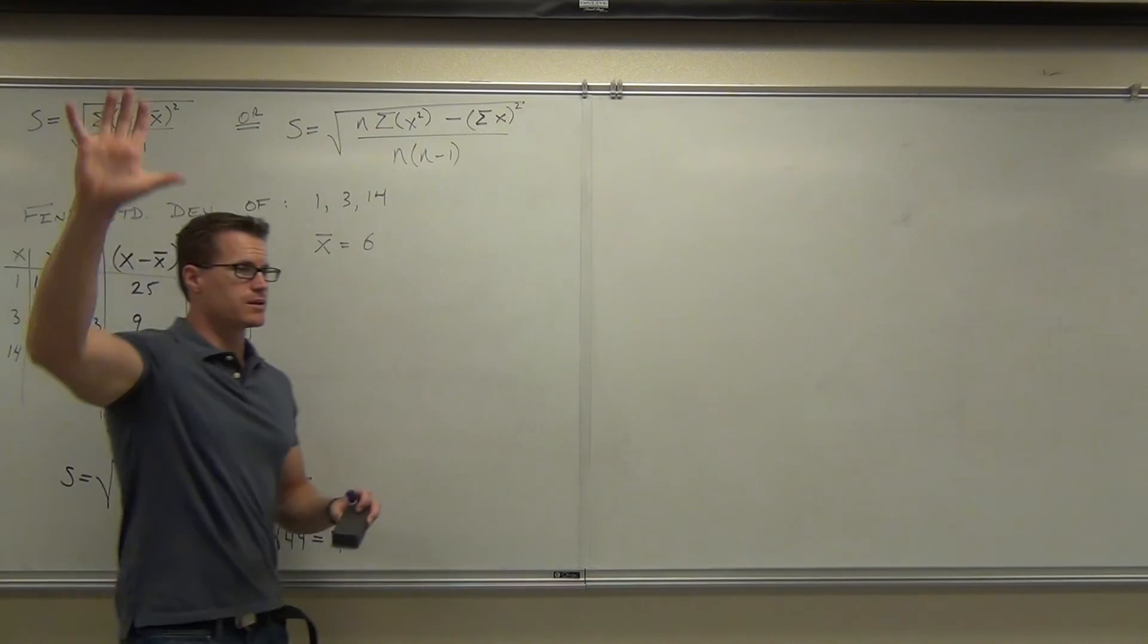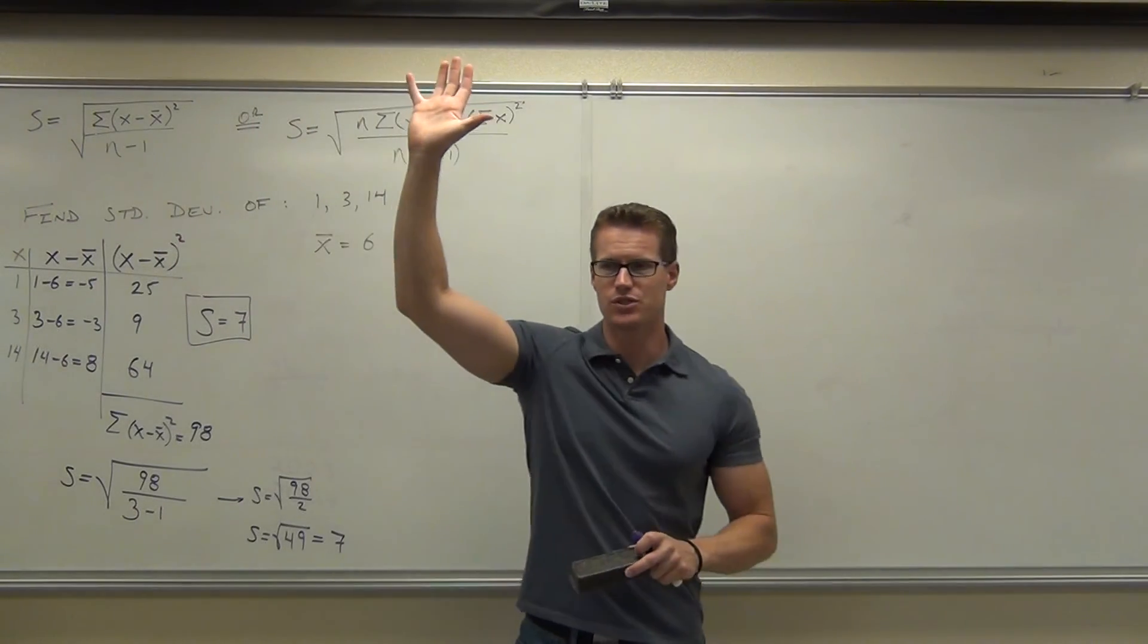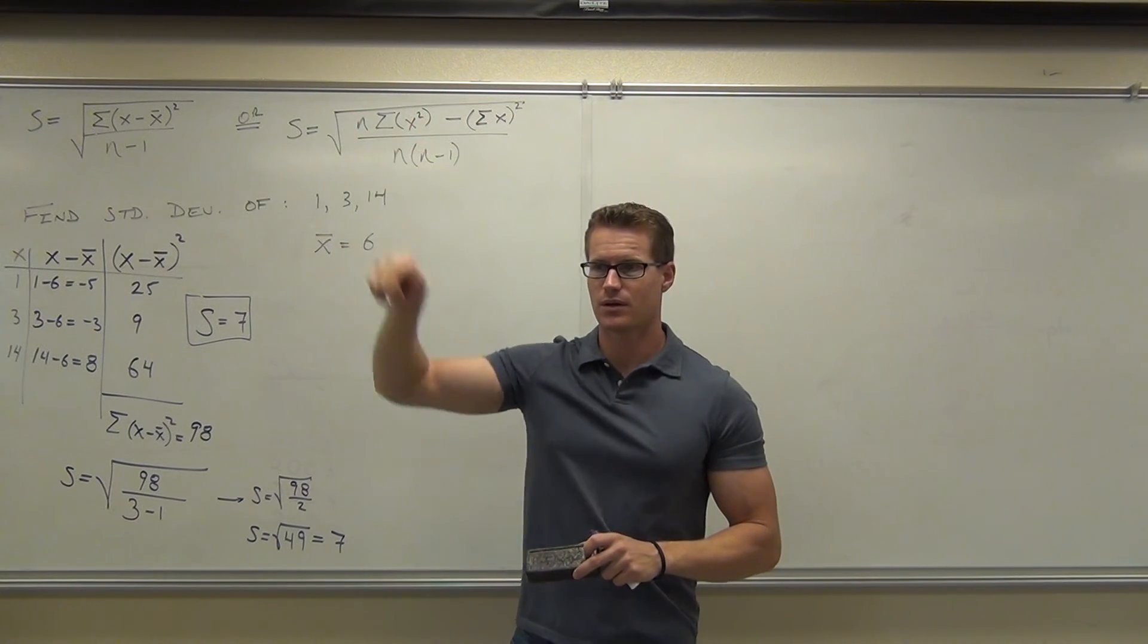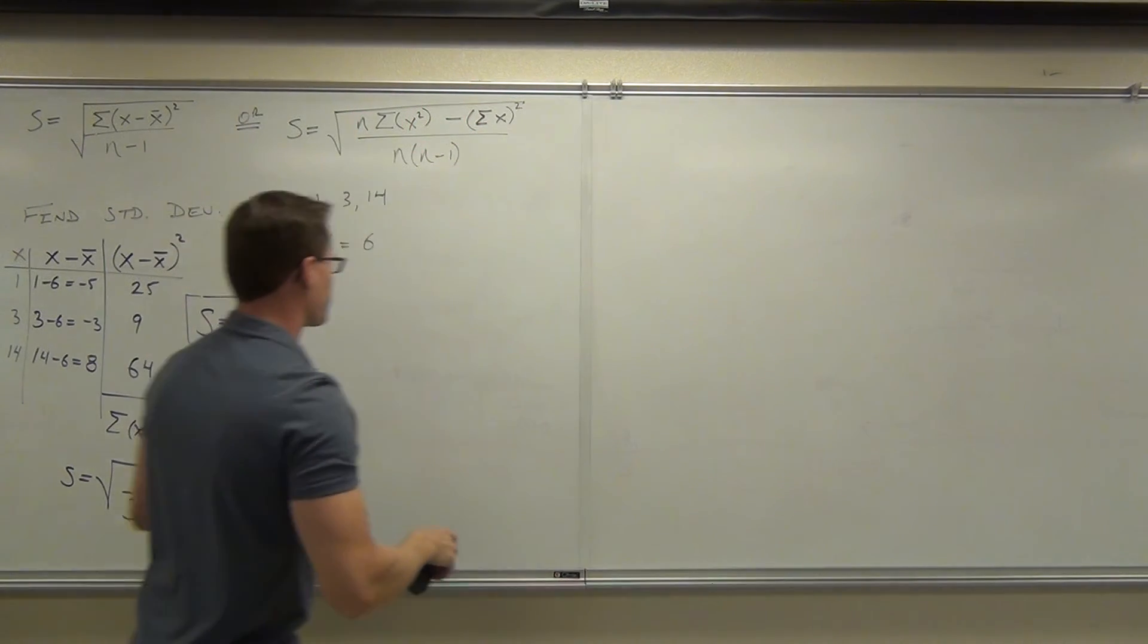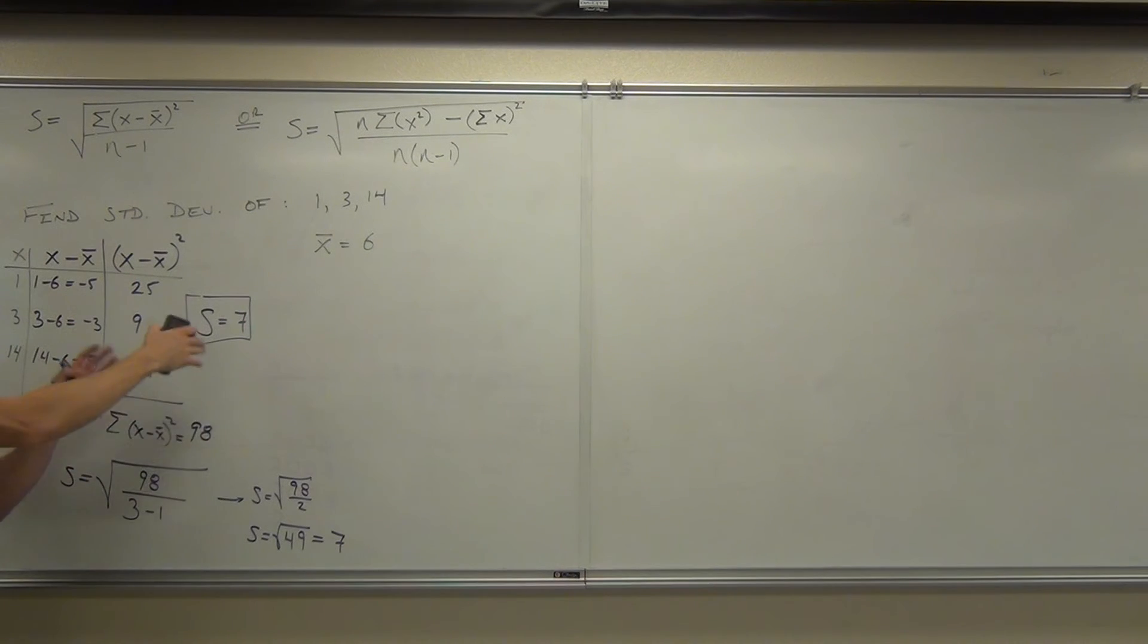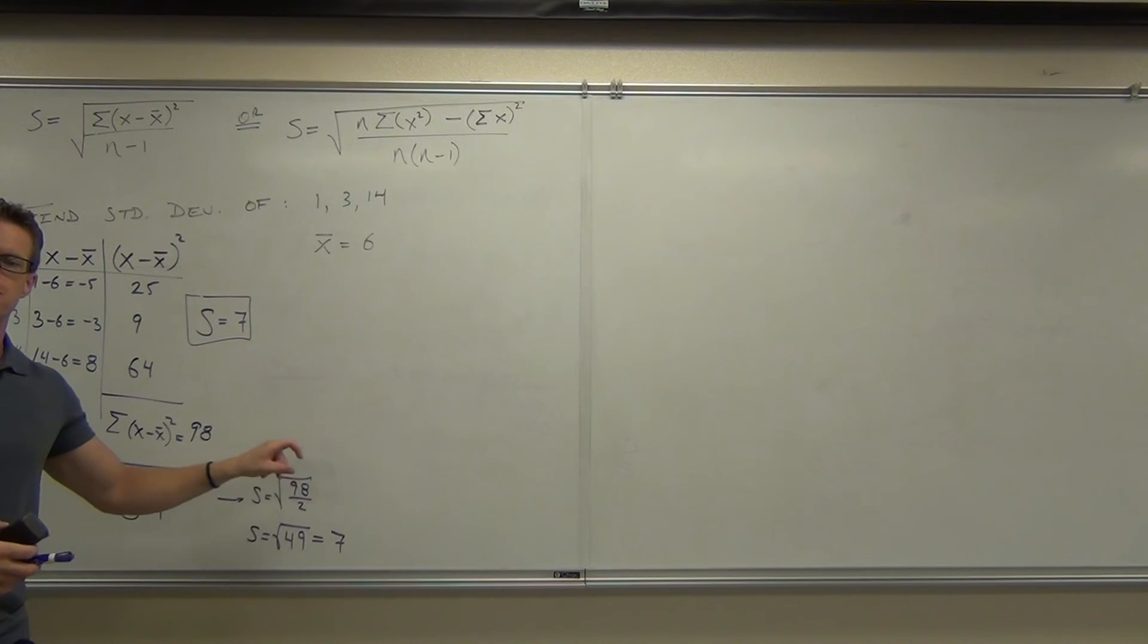How many of you feel okay calculating the standard deviation using the method we just learned? Would you like to see the other one? Here's how the other one works. Are you sure there's no more questions on this? You see that what we're doing in every case? Subtracting the mean, squaring them, adding them, and then we divide. And finally, at the very end, we take the square root after you've divided.